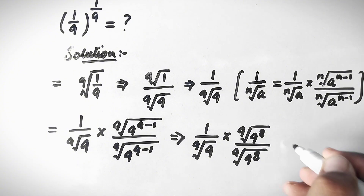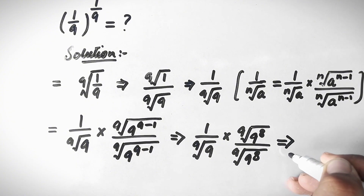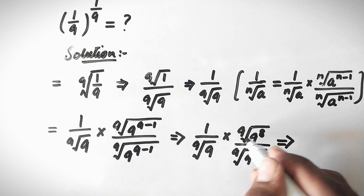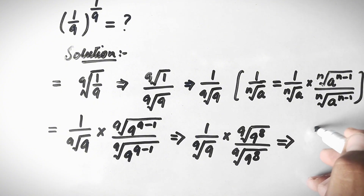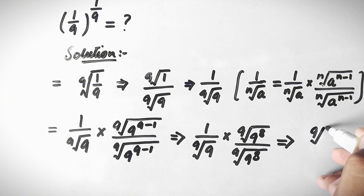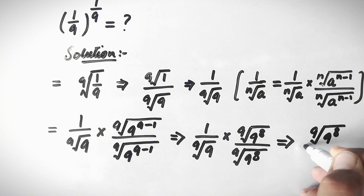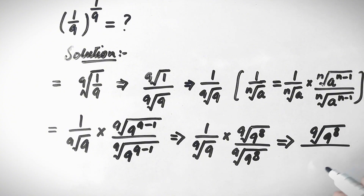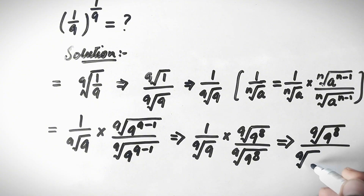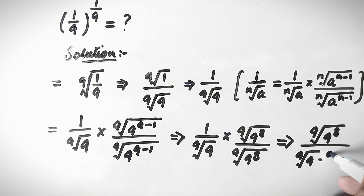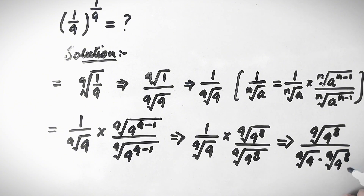Substituting n = 9, this becomes 1 over the 9th root of 9, multiplied by the 9th root of 9 to the power 8, divided by the 9th root of 9 to the power 8. So 1 times this equals the 9th root of 9 to the power 8, divided by the 9th root of 9 times the 9th root of 9 to the power 8.